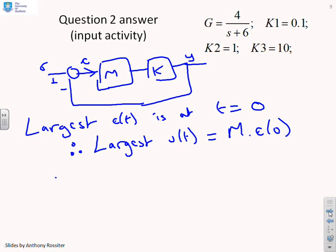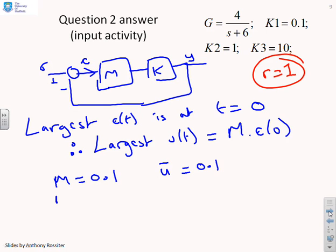So if we have m equals 0.1, then u max equals 0.1. We're assuming here, for convenience, that I'll write this here. We're assuming that r equals 1, just so we can normalise things. So if m equals 0.1, u max equals 0.1. If m equals 1, u max equals 1. And if m equals 10, u max equals 10. So clearly, as your gain increases, your maximum input also increases.